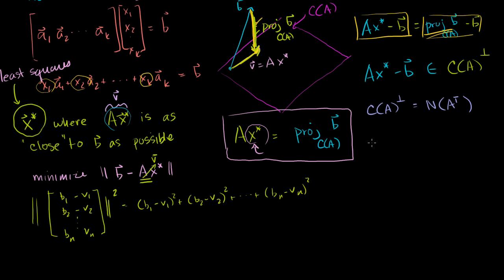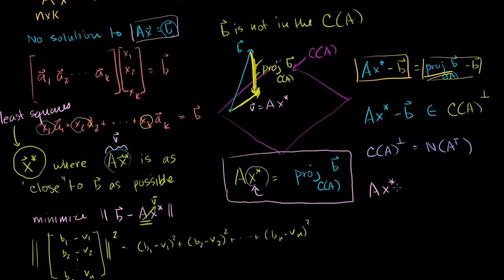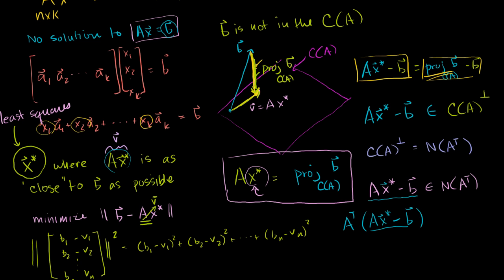So A times my least squares estimate x star, minus b, is a member of the null space of A transpose. That means if I multiply A transpose times Ax star minus b, I get zero, because it is a solution to A transpose times something equals the zero vector.